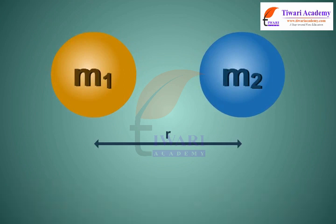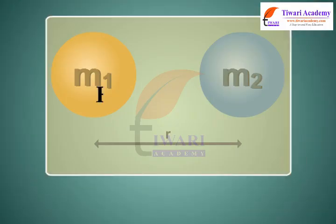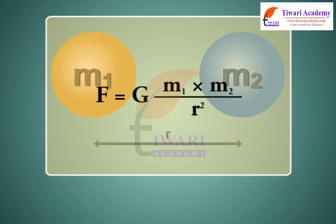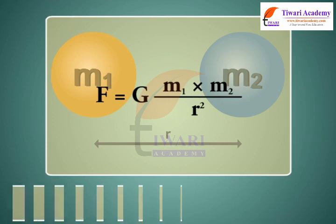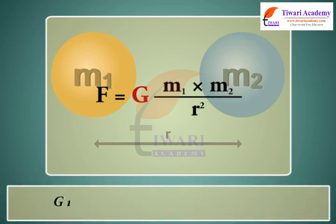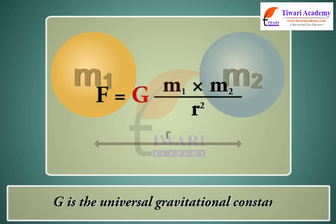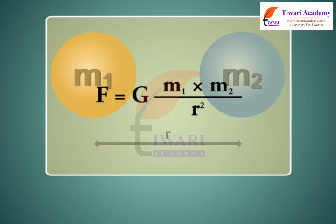From 1 and 2, force is equal to G into M1 into M2 upon R square, i.e., F = GM1M2/R². Where G is the universal gravitational constant. The SI unit of force is Newton.